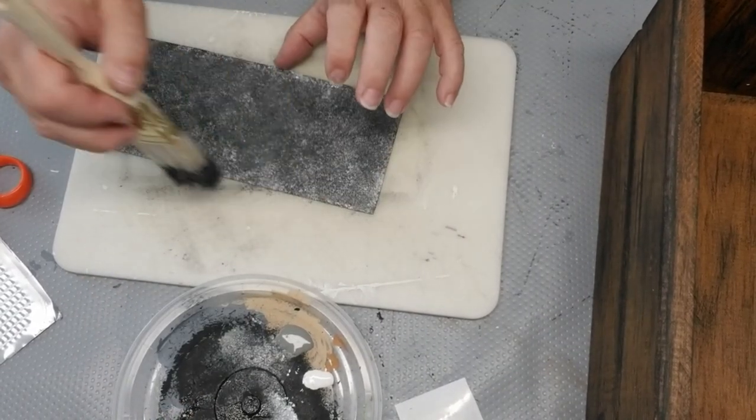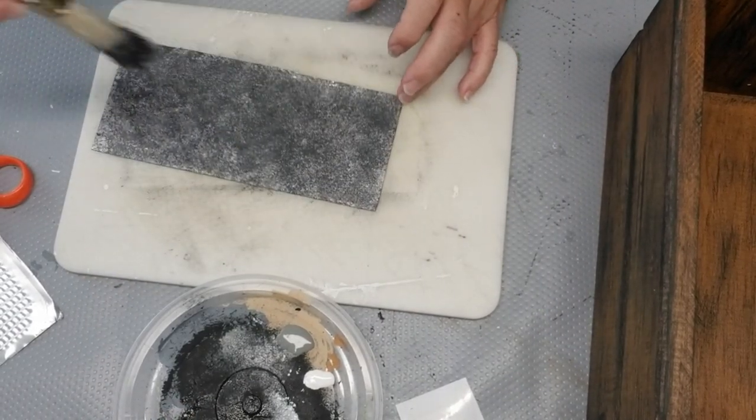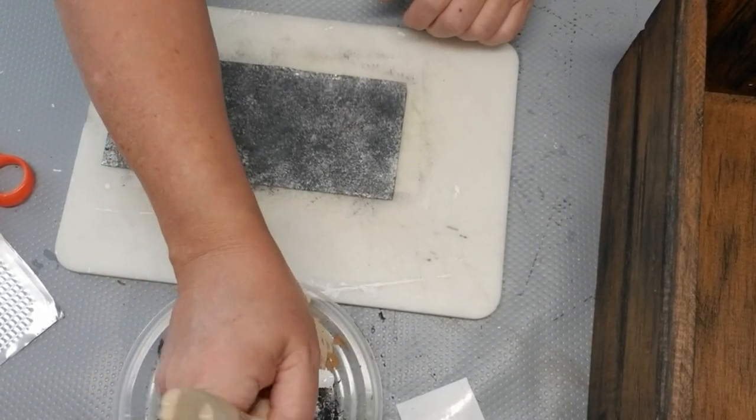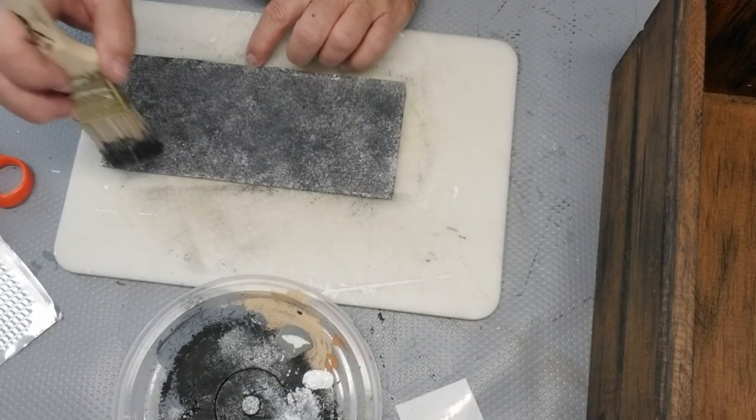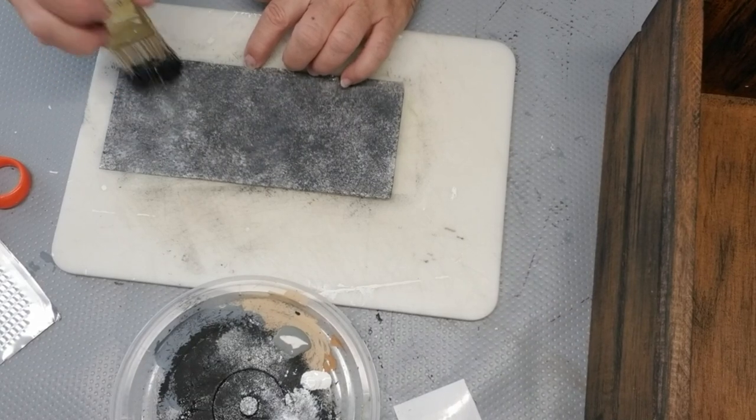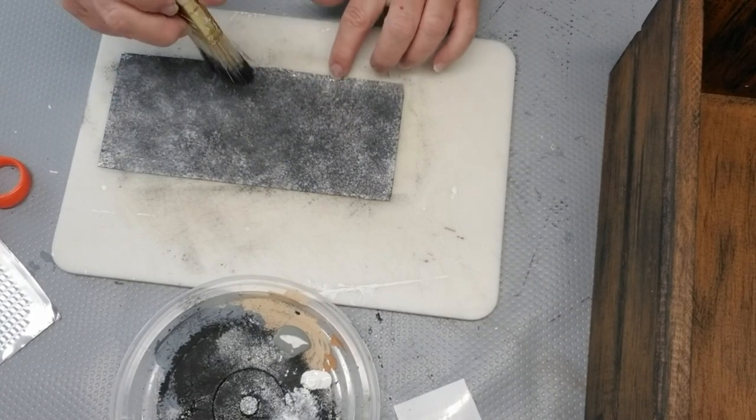Lastly, I'm going to add some white to give it a little bit of some highlights. And then I'm just going to continue to blend until I get the look that I want. I was really happy with how this turned out. And I can probably see myself doing a little bit more galvanization in the future.